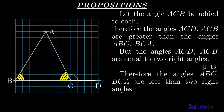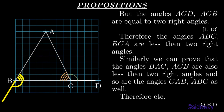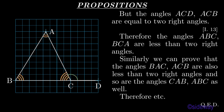Therefore the angles ABC, BCA are less than two right angles. Similarly, we can prove that the angles BAC, ACB are also less than two right angles, and so are the angles CAB, ABC as well. Therefore, etc. What was to be shown?